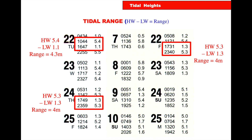The tidal range is the difference in height between high water and low water. On the 22nd we have high water 5.4, low water 1.1 — range 4.3. On the 24th, low water 1.3, high water 5.3 — range 4 metres. We want to get into the habit of working out tidal ranges when we look up the tides.